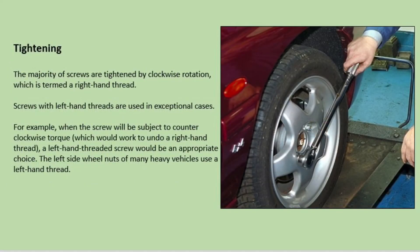Tightening. The majority of screws are tightened by clockwise rotation, which in turn is a right-handed thread. Screws with left-handed threads are used in exceptional cases. For example, when the screw will be subject to counter-clockwise torque which would work to undo a right-hand thread, a left-handed thread screw would be an appropriate choice. The left side wheel nuts of many heavy vehicles use a left-handed thread.